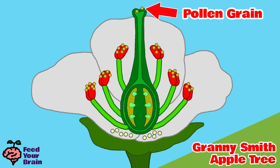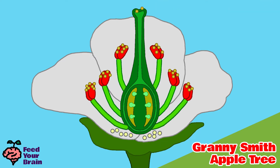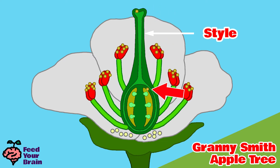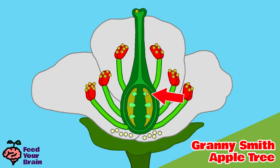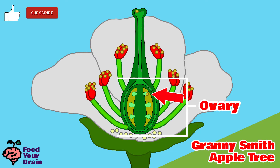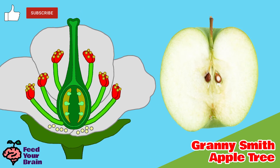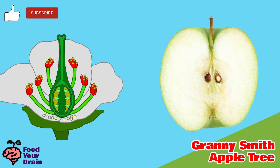Now one of the pollen grains at the top of the pistil, at the opening of the stigma, makes its way down the tube of the pistil — called the stile — and into the base, called the ovary. The pollen grain then makes its way to an ovule, where it has now pollinated this flower blossom. The ovary grows into an apple, and the ovules grow into the seeds of the apple.